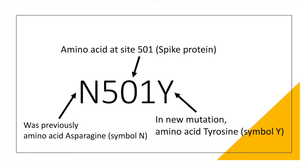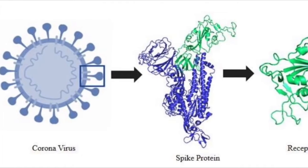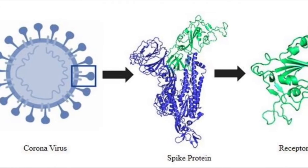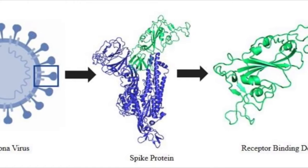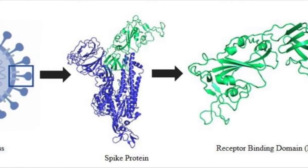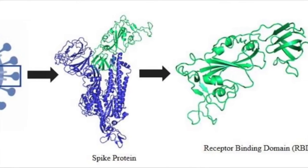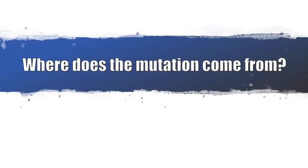Because this amino acid is part of what is called the Receptor Binding Domain, or RBD, the N501Y mutation could affect how readily the virus gets into human cells. More on that later.